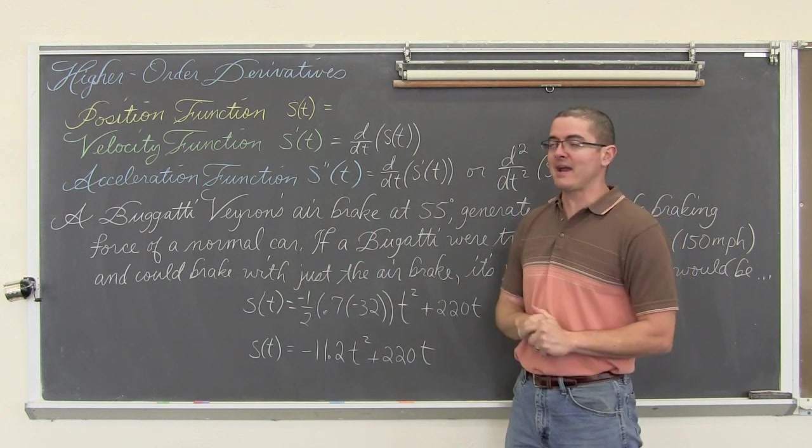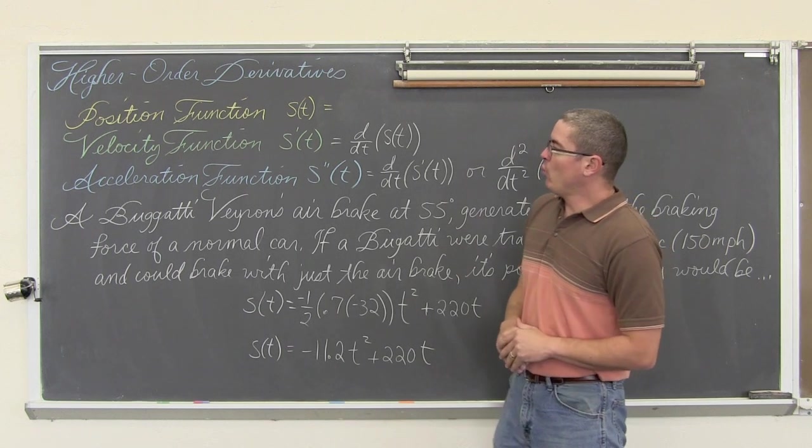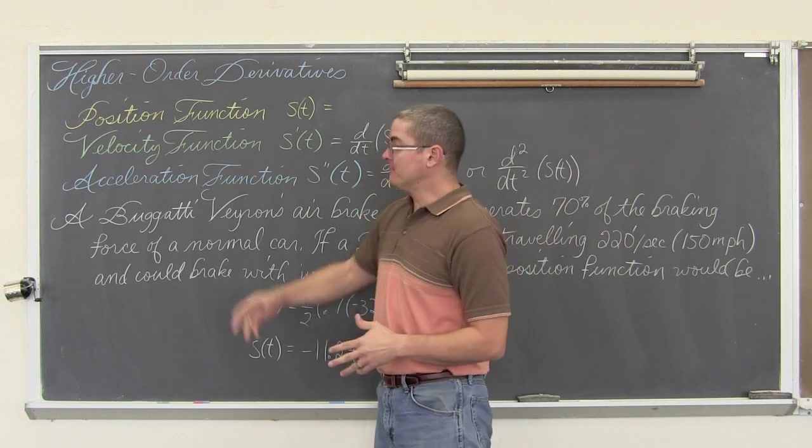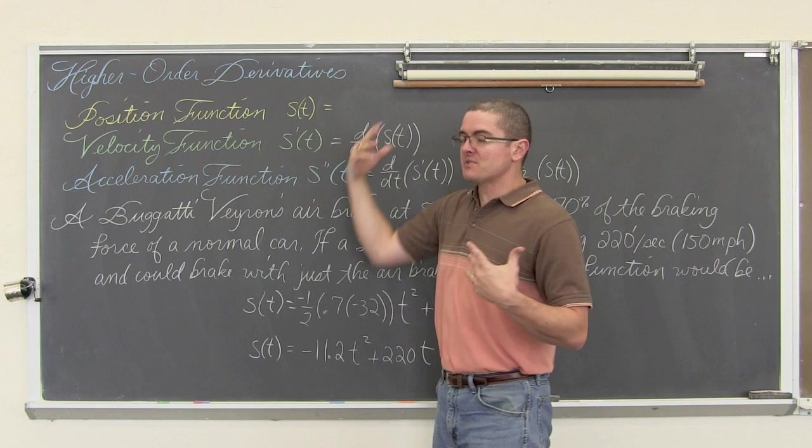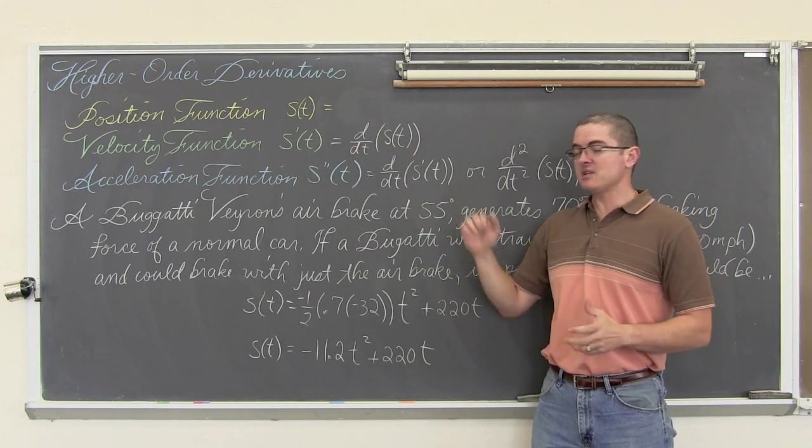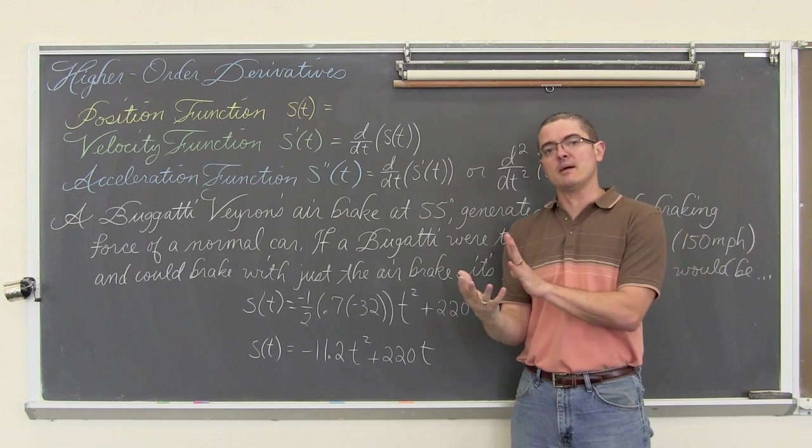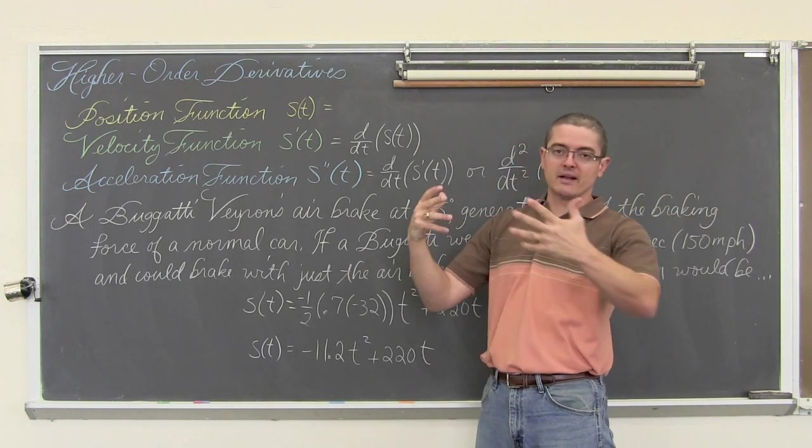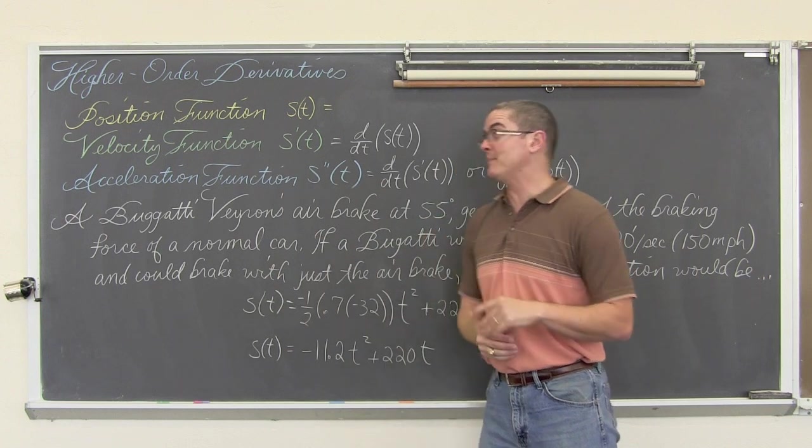A Bugatti Veyron braking with just its air brake. When we have an application problem, such as an object moving, maybe throwing an object off of a building, in this case a car being slowed by brakes, you could be talking about a car under its own acceleration doing just the opposite.